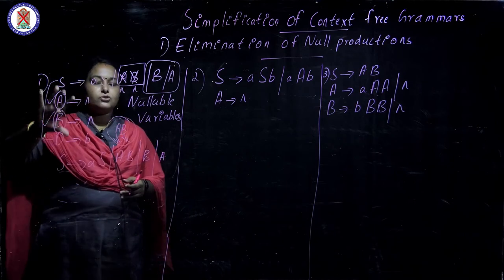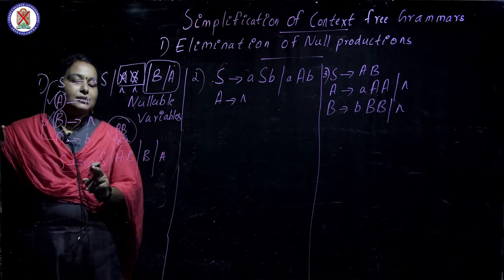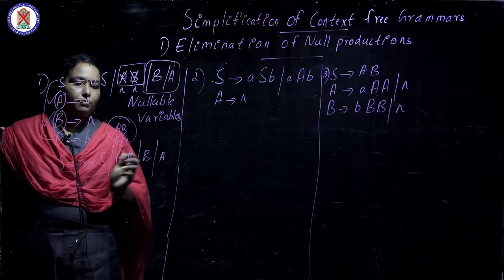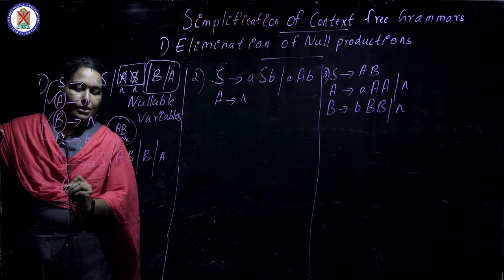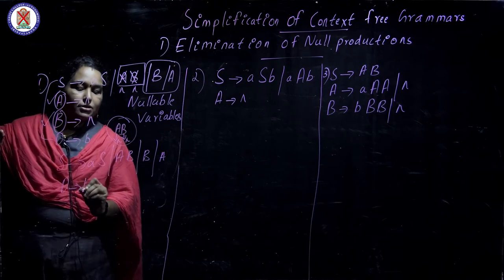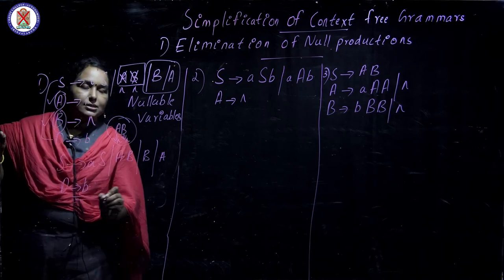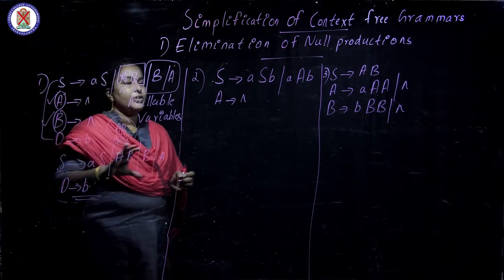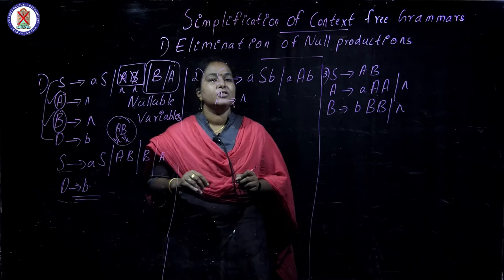After simplification, the resulting grammar will be: S gives A S, or A B, or B, or A; and D derives B.